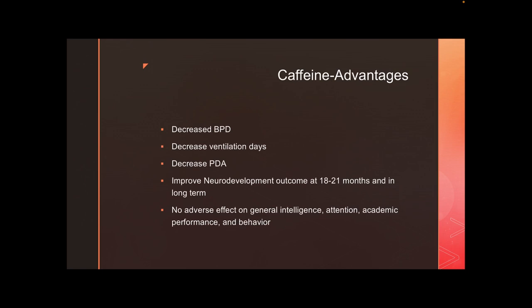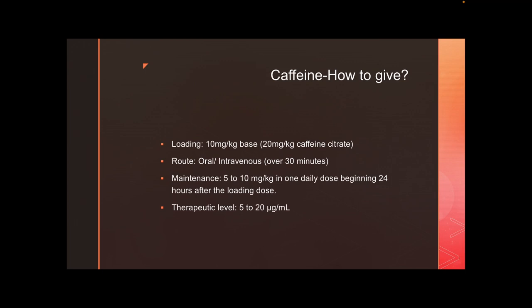Other advantages of caffeine include reducing PDA, reducing bronchopulmonary dysplasia, decreasing ventilation days, and there is a definite improved neurodevelopmental outcome noticed at 18 to 21 months of age. As an added advantage, caffeine has essentially no neurodevelopmental disadvantages.